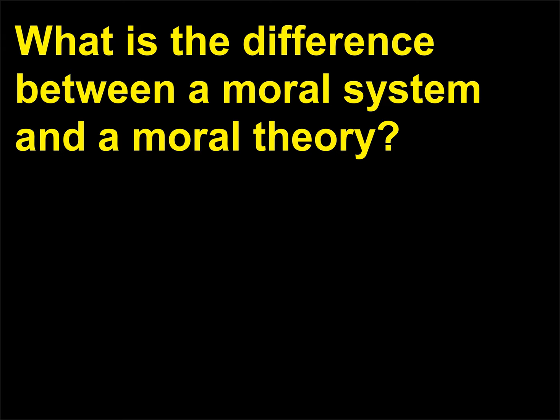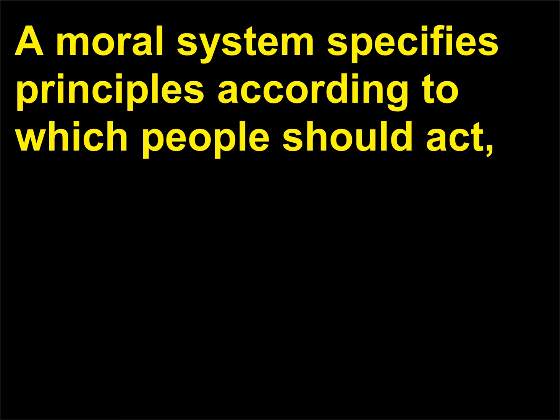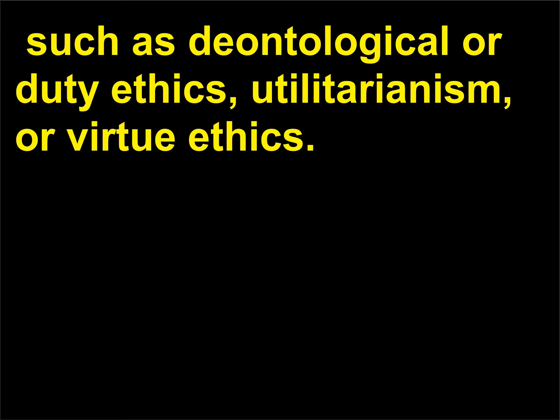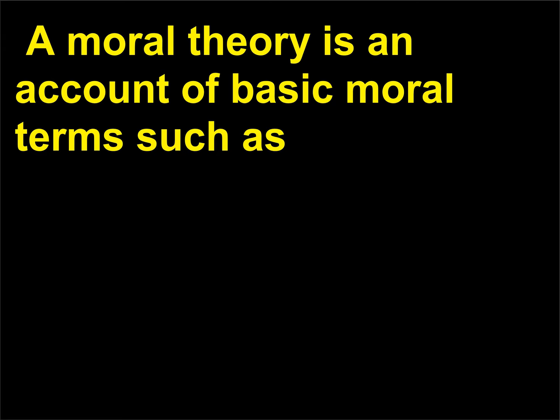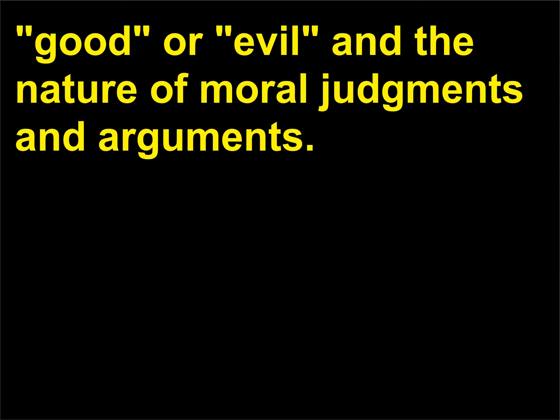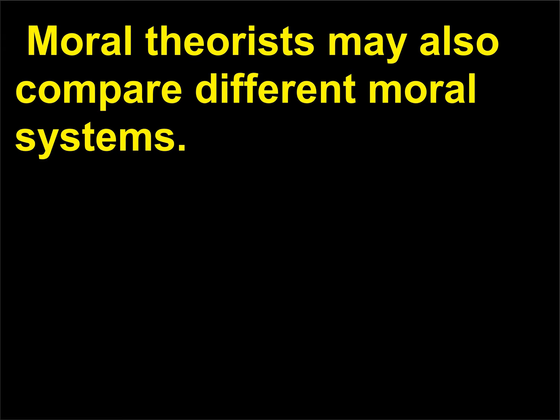What is the difference between a moral system and a moral theory? A moral system specifies principles according to which people should act, such as deontological or duty ethics, utilitarianism, or virtue ethics. A moral theory is an account of basic moral terms such as good or evil and the nature of moral judgments and arguments. Moral theorists may also compare different moral systems.